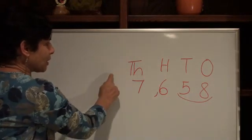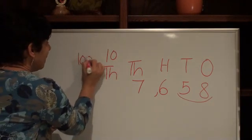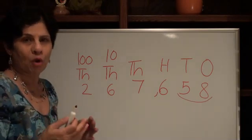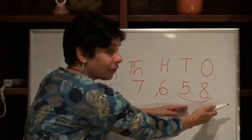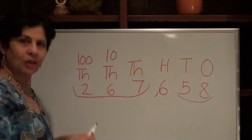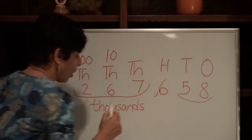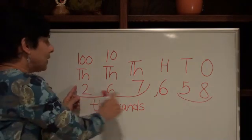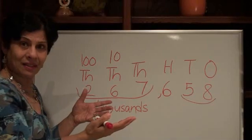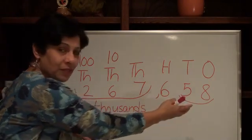Ten of this makes one of this, so the place value here is ten thousand, and then the next one is one hundred thousand. Now think about it as being a different boat. These two are friends, he's by himself, and then these three guys are friends and they sit in the thousands boat. When you have a big number, you read the number inside — pretend it's just your normal number. What's this number here? Two hundred sixty-seven. Now read the number and tell me the boat: two hundred sixty-seven thousand, six hundred, fifty-eight. And there's your big number.